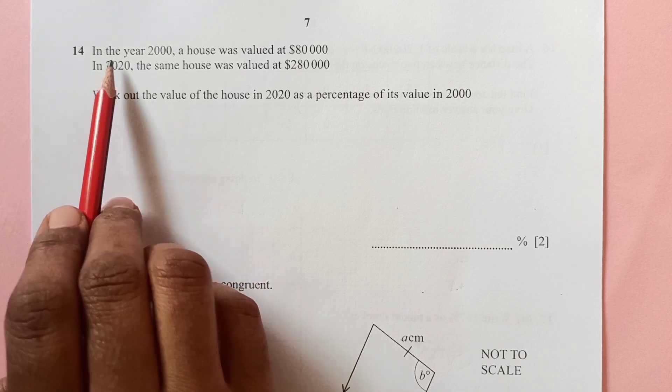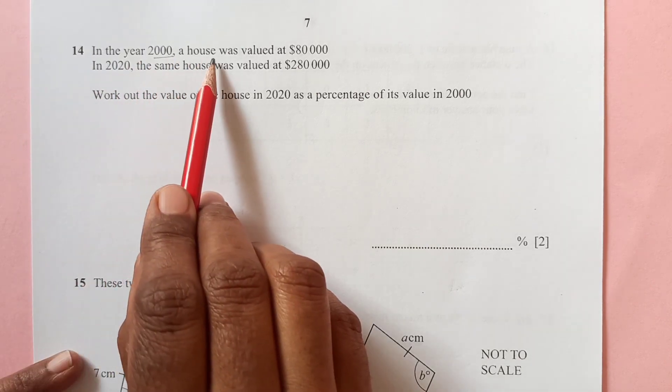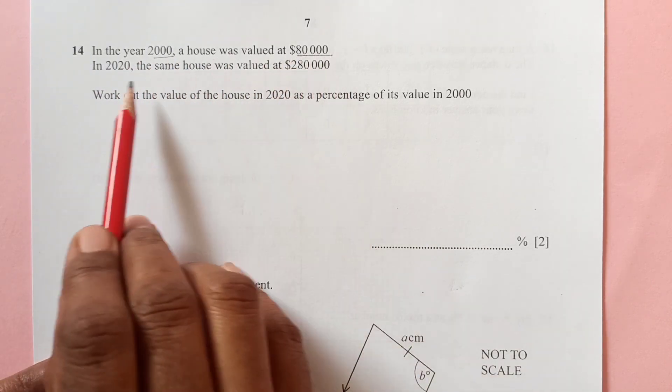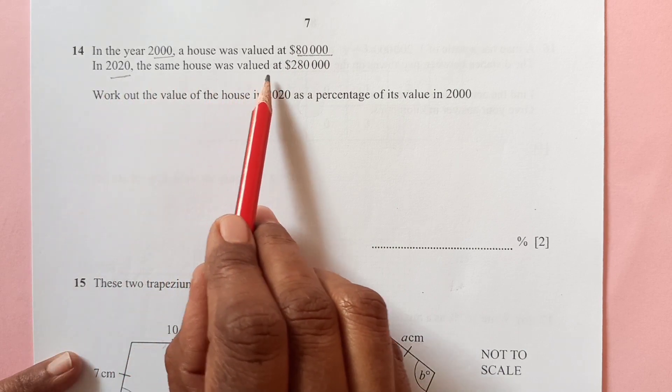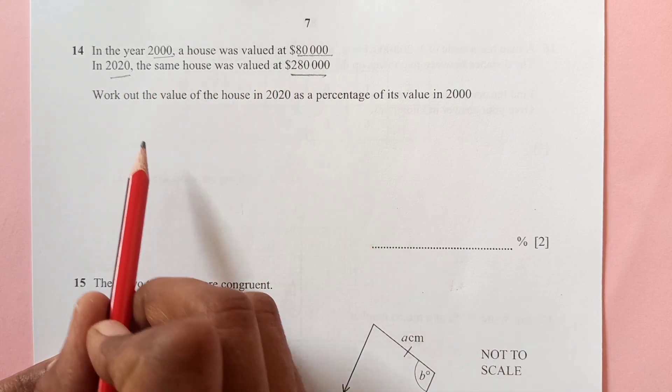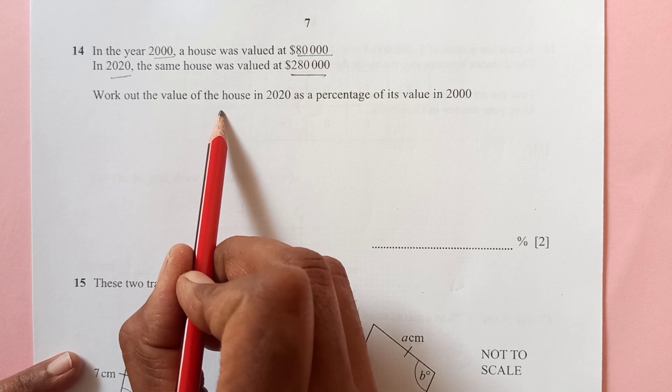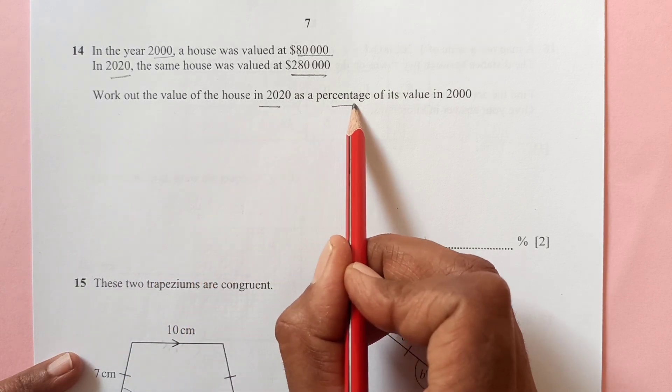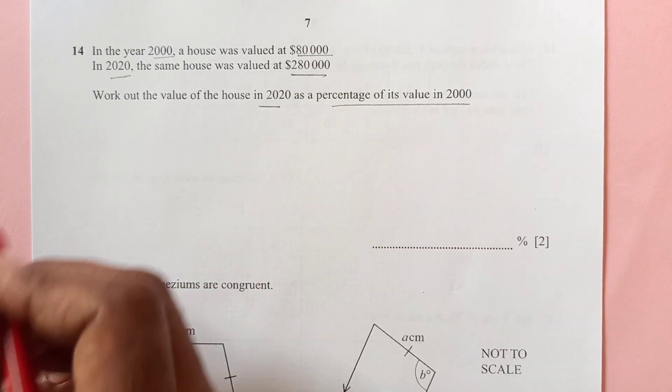Question 14. In the year 2000 a house was valued at 80,000. In 2020 the same house was valued at 280,000. Work out the value of the house in 2020 as a percentage of its value in 2000.